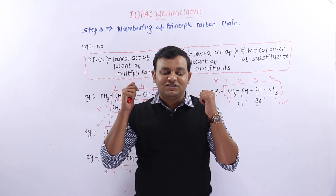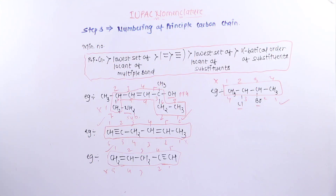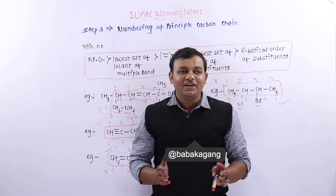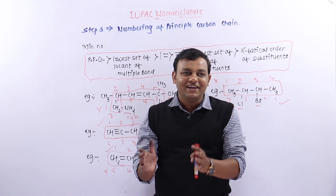यह थी Step 3 — numbering of principal carbon chain। जल्दी से इसका screenshot ले लीजिए। This video is on IUPAC Nomenclature, and next we will continue with the nomenclature.